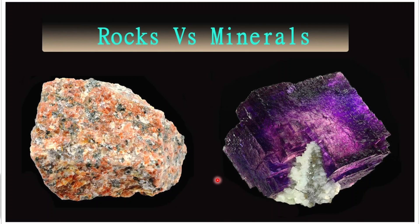Most of the crust is made up of rocks. Rocks not only form types of landforms but also form the basis of soil and its formation. According to the mode of occurrence and formation of rocks, they can be classified into three types: namely igneous, sedimentary, and metamorphic.